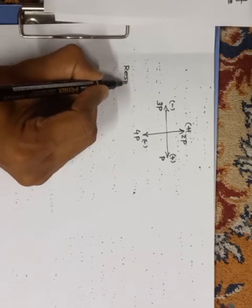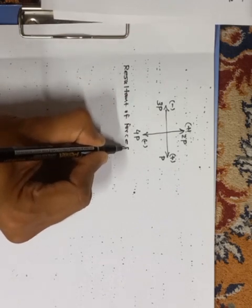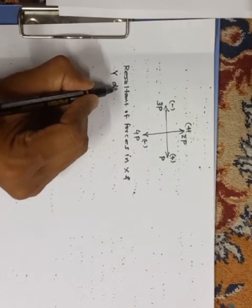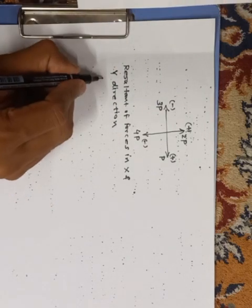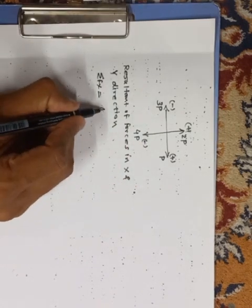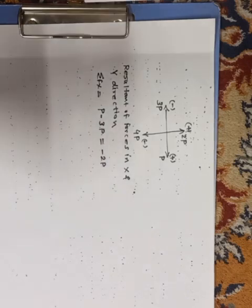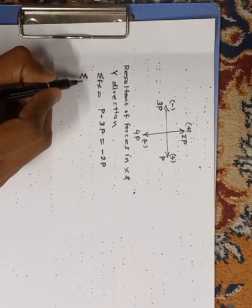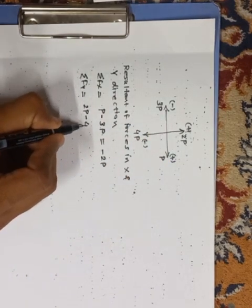So, resultant of forces in x and y direction. Summation of fx equals to, I can write, this is P minus 3P, so that is equals to minus 2P. Summation of fy is equals to 2P minus 4P, that is equals to minus 2P.